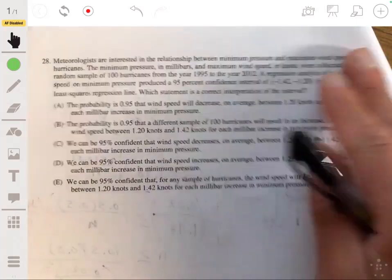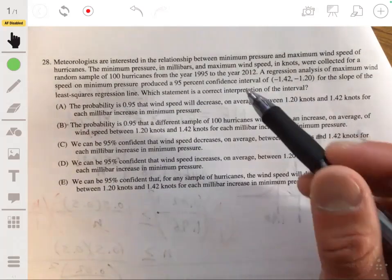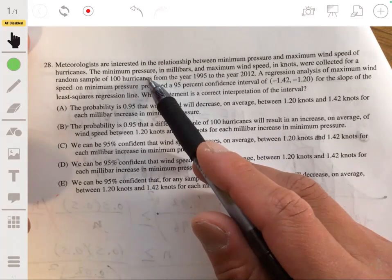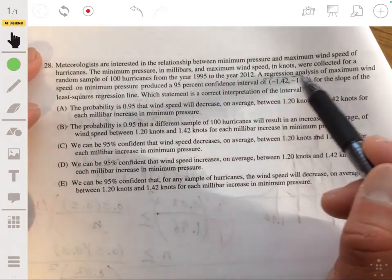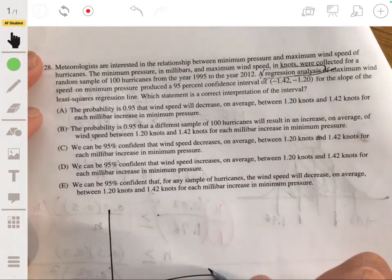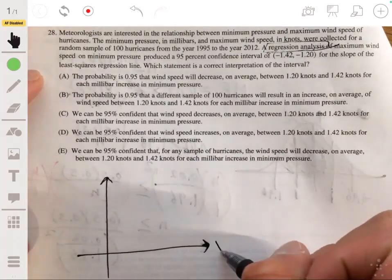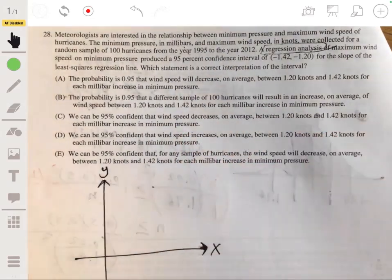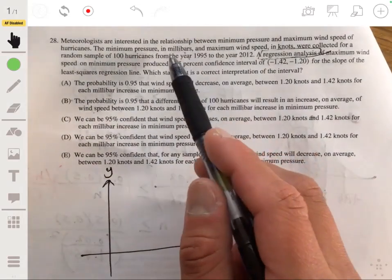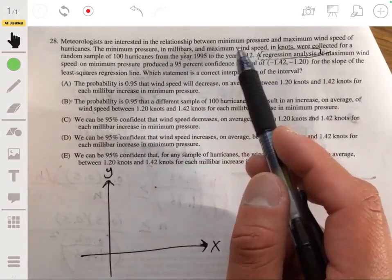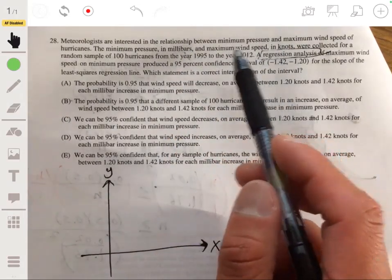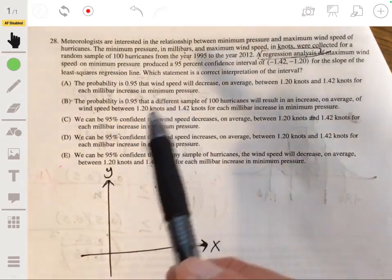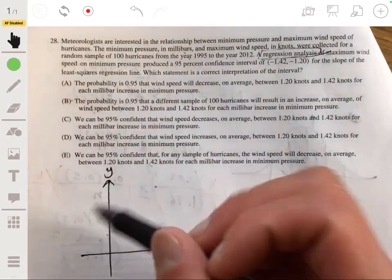Okay, so this one, honestly, these ones sometimes can even overwhelm me just with the terminology, so just remember that when it comes to regression analysis, it's really just a scatterplot, like an XY graph. It's always going to come down to that, so you don't really have to understand what minimum pressure millibars, you know, you don't have to have a background in physics, you don't have to be a weather person. You just got to basically decide which one is X and which one is Y, and the way it's worded, this is maximum wind speed on minimum pressure.